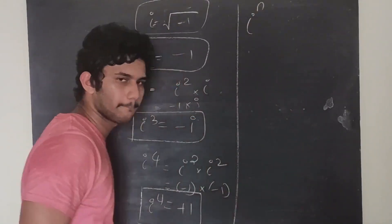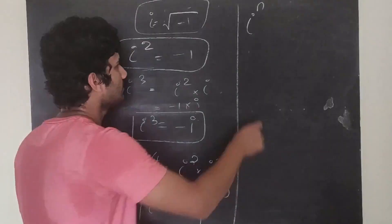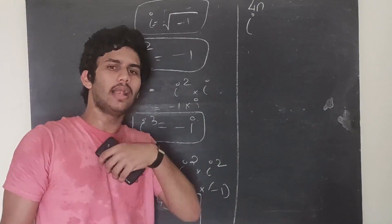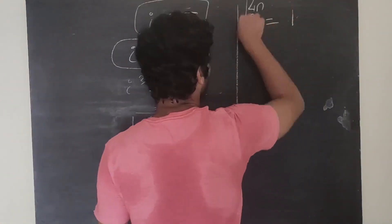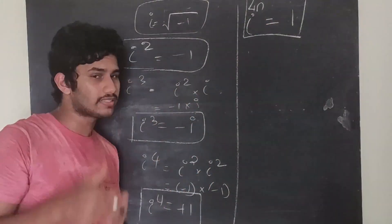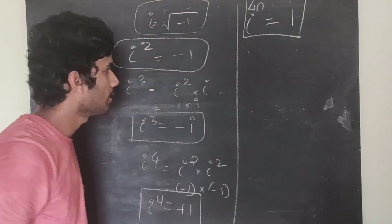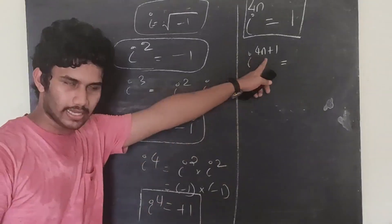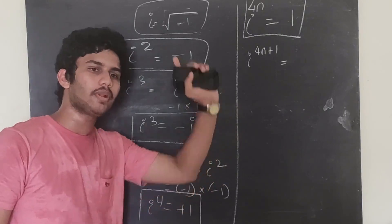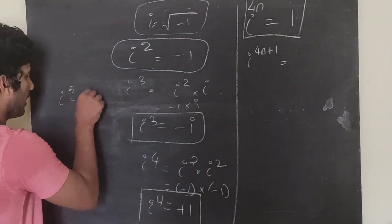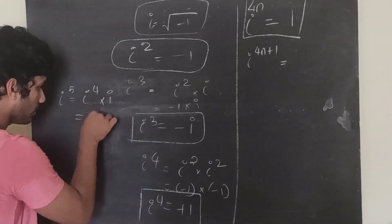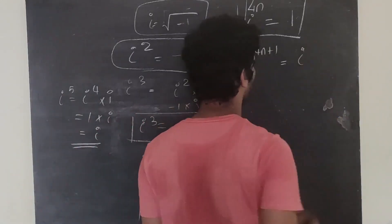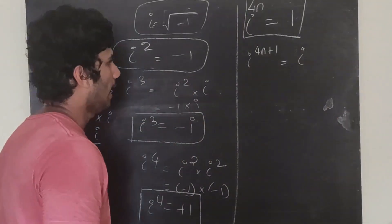Generalization of powers of iota: i^(4n) = 1. Then i^(4n+1) — for example i⁵ = i⁴ · i = 1 · i = i. So i^(4n+1) = i. Then i^(4n+2) — for example i⁶ = i⁵ · i = i · i = i² = −1. So i^(4n+2) = −1. And i^(4n+3) — for example i⁷ = i⁶ · i = (−1) · i = −i. So i^(4n+3) = −i.